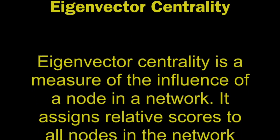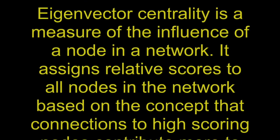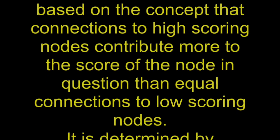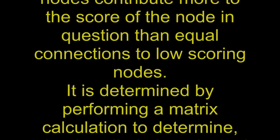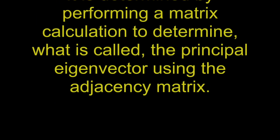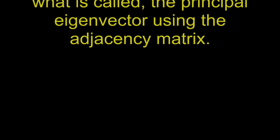Eigenvector centrality is a measure of the influence of a node in a network. It assigns relative scores to all nodes in a network based on a concept that connections to high scoring nodes contribute more to the score of the node in question than equal connections to low scoring nodes. It is determined by performing a matrix calculation to determine what is called the principal eigenvector using the adjacency matrix.